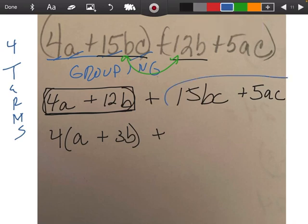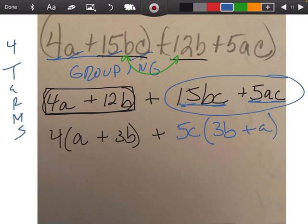And then if I circle these two and I say, what's common to both of these? Well, they both have a 5 and they both have a c, so we can take out a 5 and a c, and now I'm left with a 3b plus a.